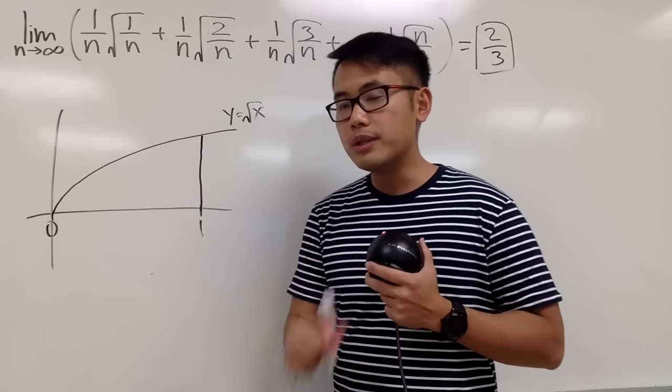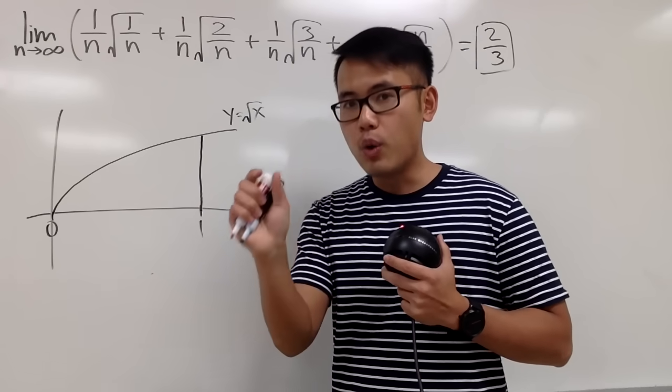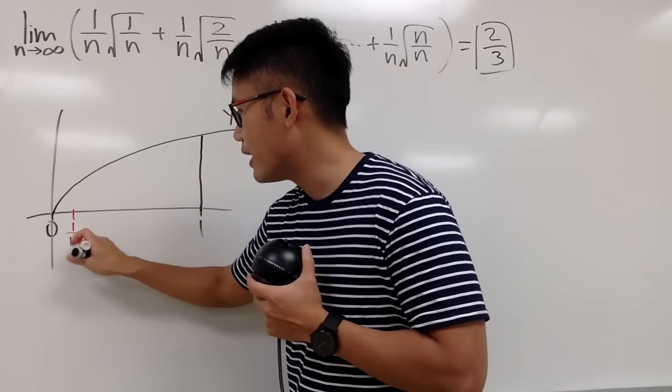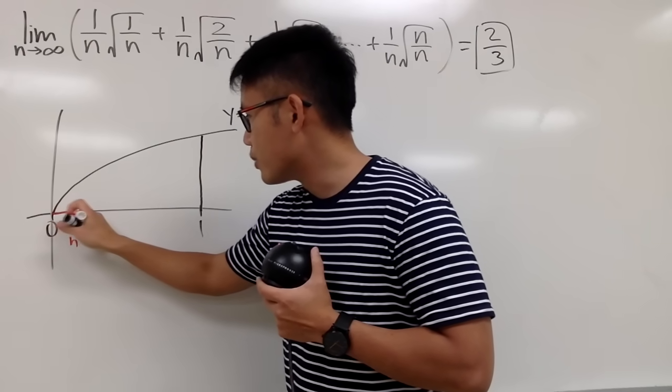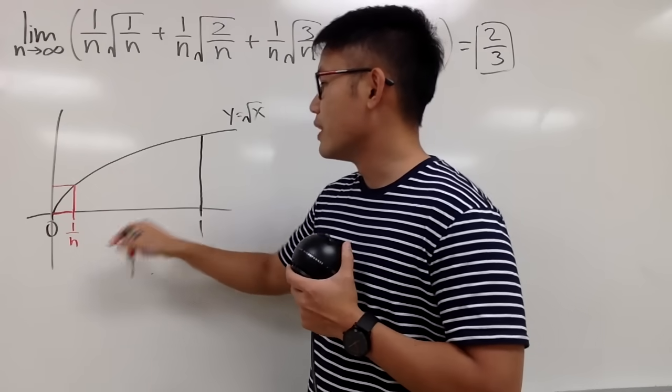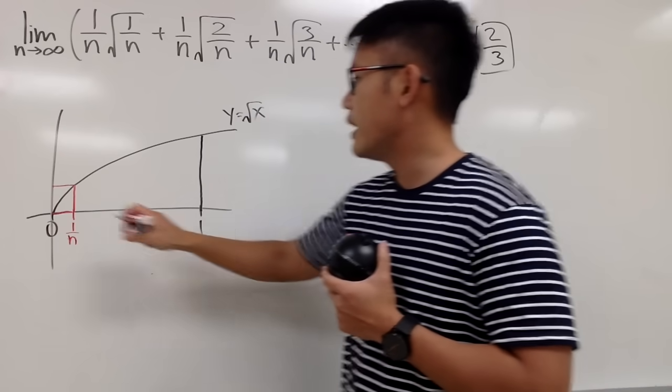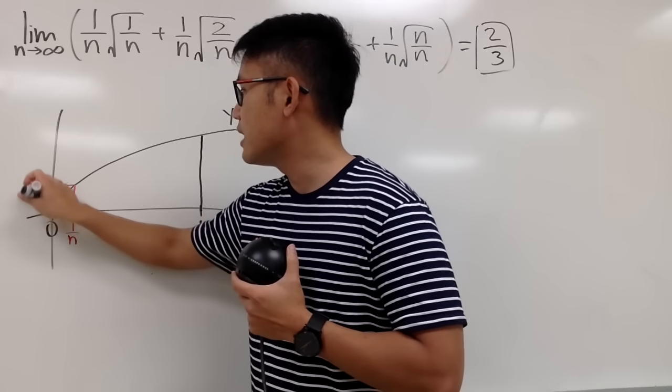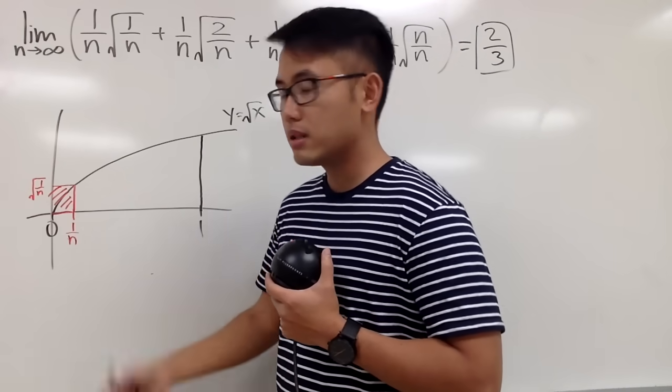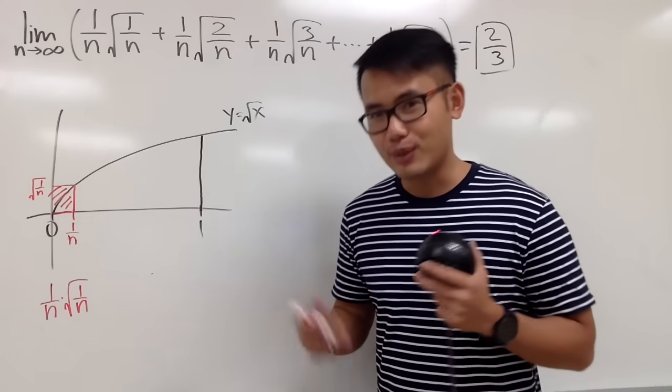Anyway, what we do is look at this interval, which is with length 1, and you divide this into n equal width rectangles. So the base for the first one is 1 over n. And you are just going to draw a rectangle, so you are going to go up like this. And what's the height of this? Well, of course, you plug in 1 over n, this is the x value, just go ahead and plug it into this, and you get 1 over n inside of the square root. So the area of this first rectangle is simply 1 over n times square root of 1 over n.